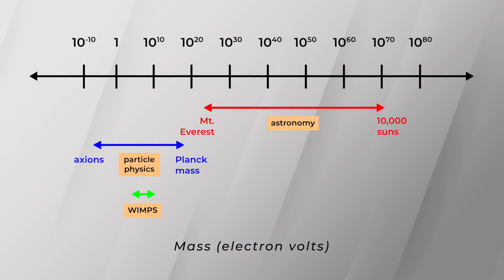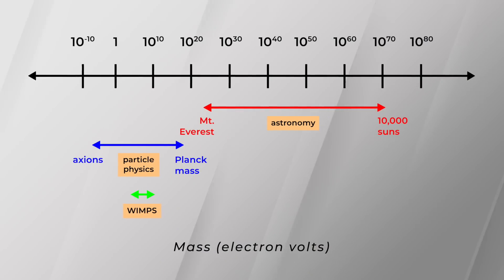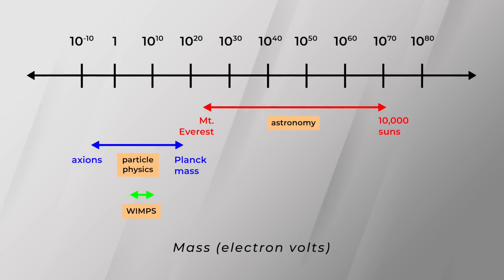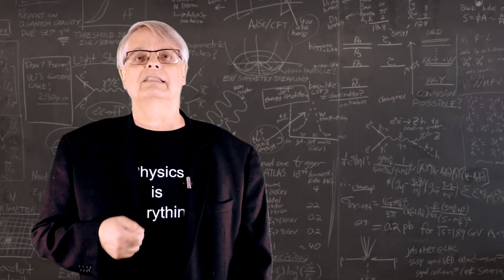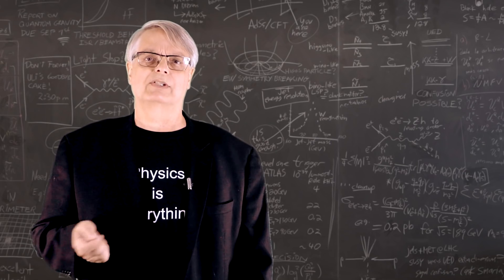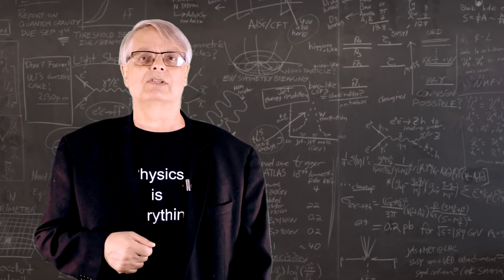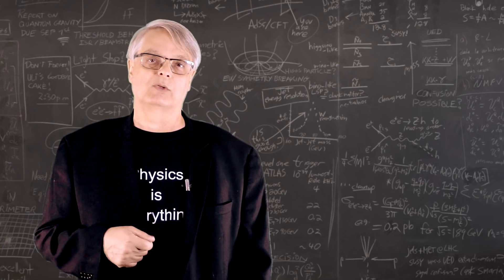The dark matter research community has looked for candidate particles from a millionth of an electron volt all the way up to much heavier than the sun, and we found nothing so far. That doesn't necessarily mean that dark matter doesn't exist. It might just have properties that current and past experiments weren't sensitive to.